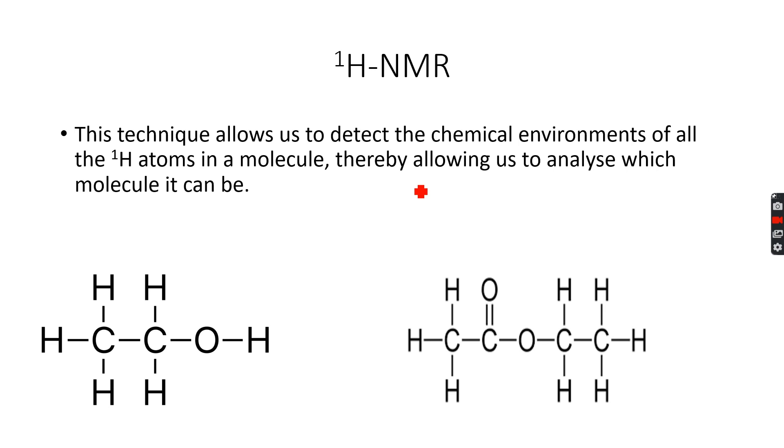There are two types of NMR we're going to deal with. One is proton NMR, written as ¹H-NMR because the mass of a hydrogen atom is one atomic mass unit, as it has one proton in its nucleus. You can also see that this is an odd number.